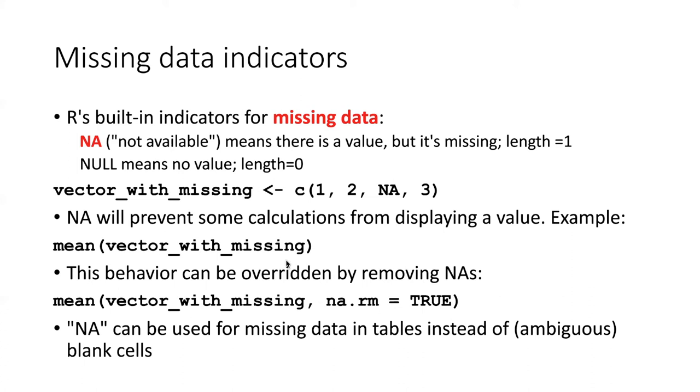It's actually good to have a special indicator for NA because if we create a table and we have some empty cells, then that's a bit ambiguous. Does that mean the cells represent missing data? Does it mean the cells are strings and they are empty strings? Rather than being ambiguous, we can use the NA indicator to differentiate between missing data and these other things.